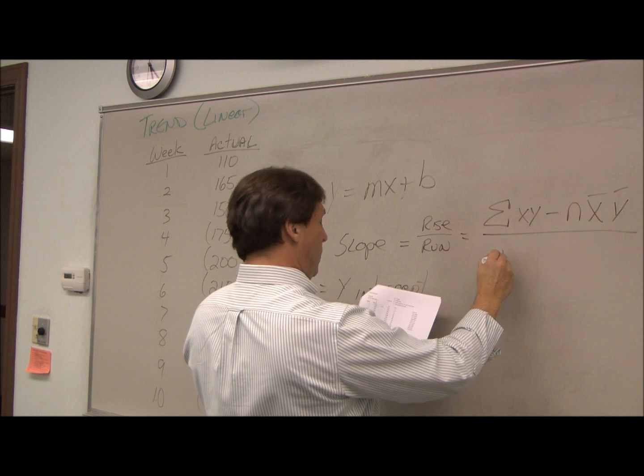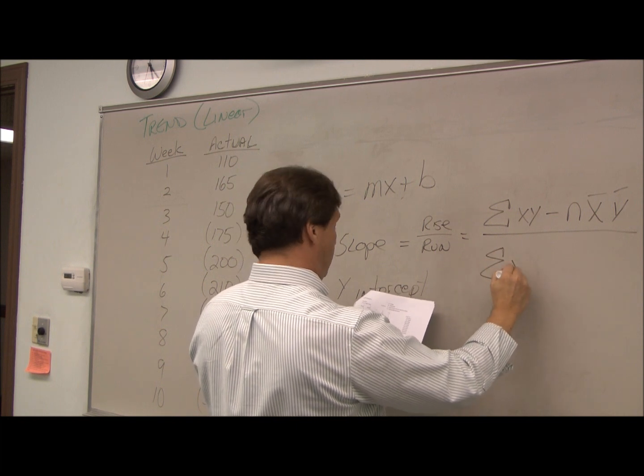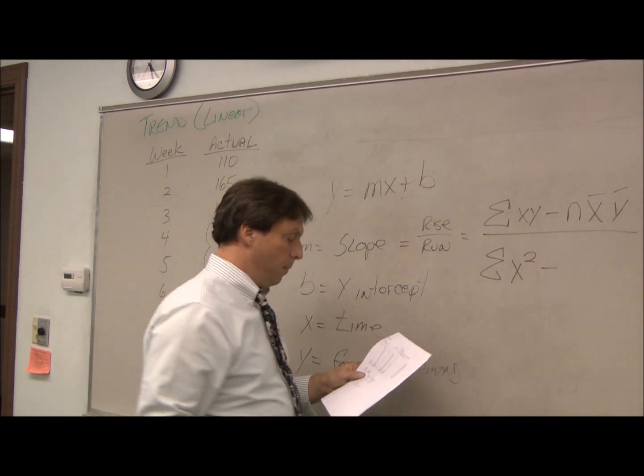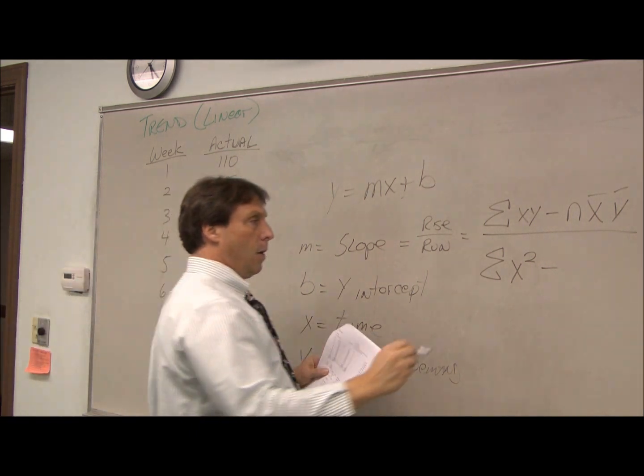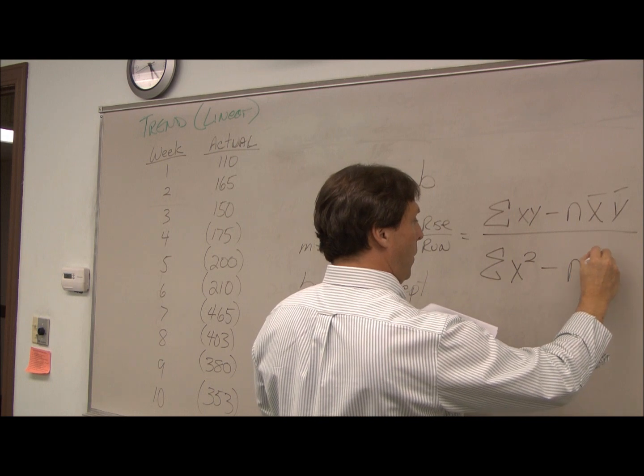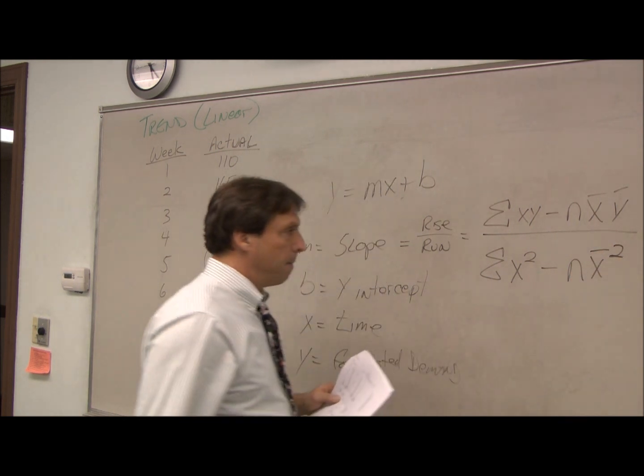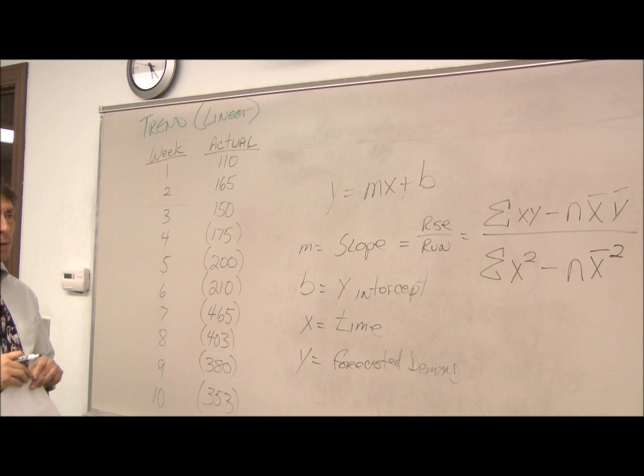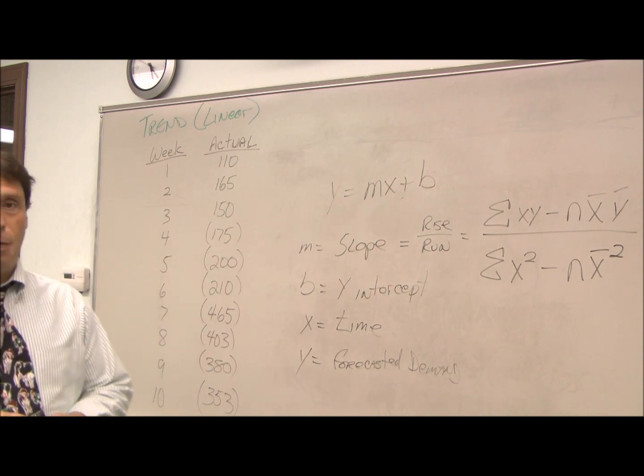From that, we're going to do the summations of our x-squared minus our n times our x-bar squared. So that's the same as the rise over the run, only in statistical form.